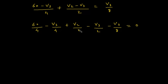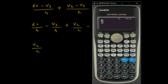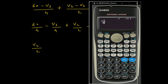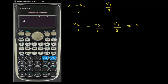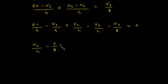Expanding: 60/4 − V3/4 + V2/2 − V3/2 − V3/8 = 0. Rearranging, moving 60/4 to the right side: V2/2 − (7/8)·V3 = −60/4. Let's call this equation number 2.